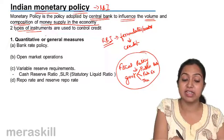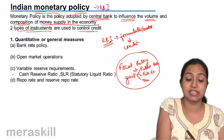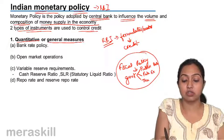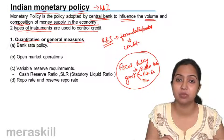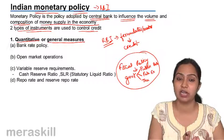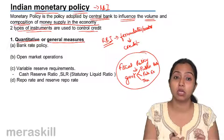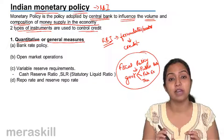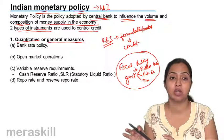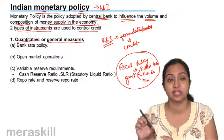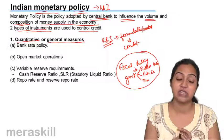It does that by using two types of instruments to control credit. First is quantitative or general measures, and the second is qualitative or selective measures. Quantitative controls the quantity of credit in the market. Qualitative or selective applies to a selective section of the economy to curtail credit in that section.